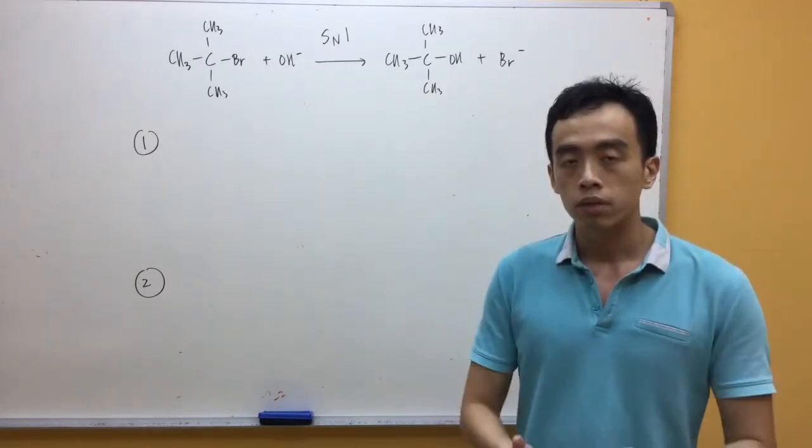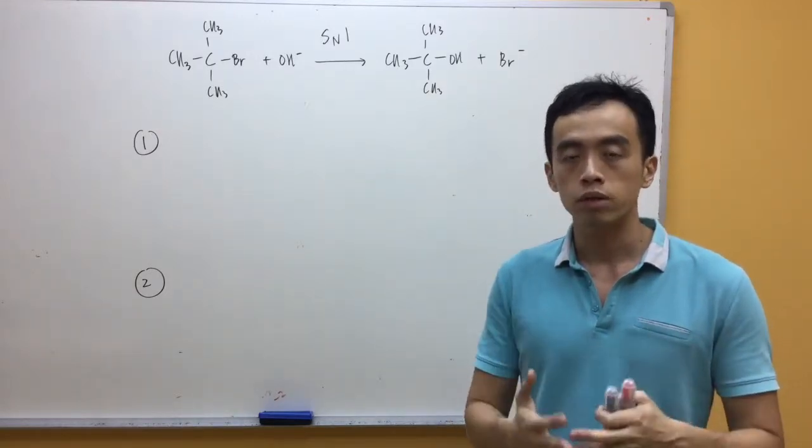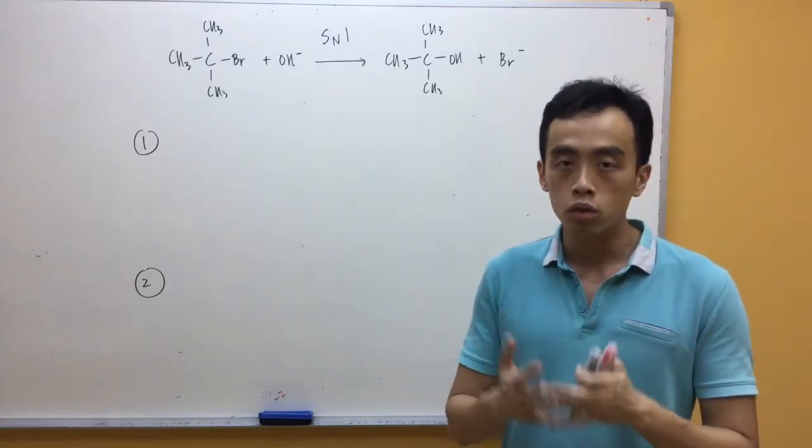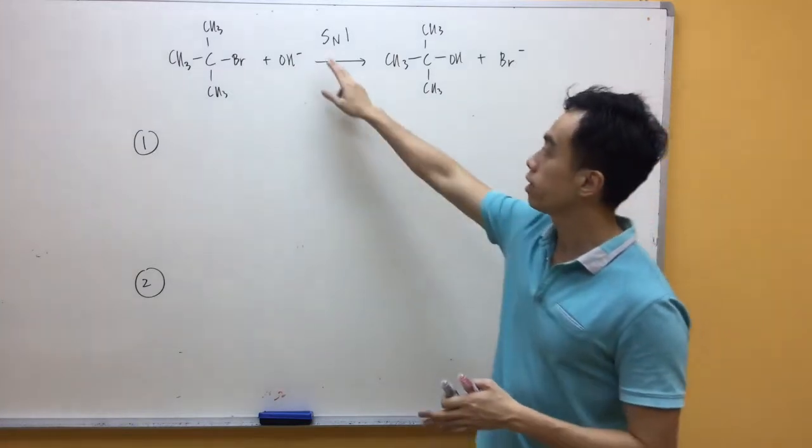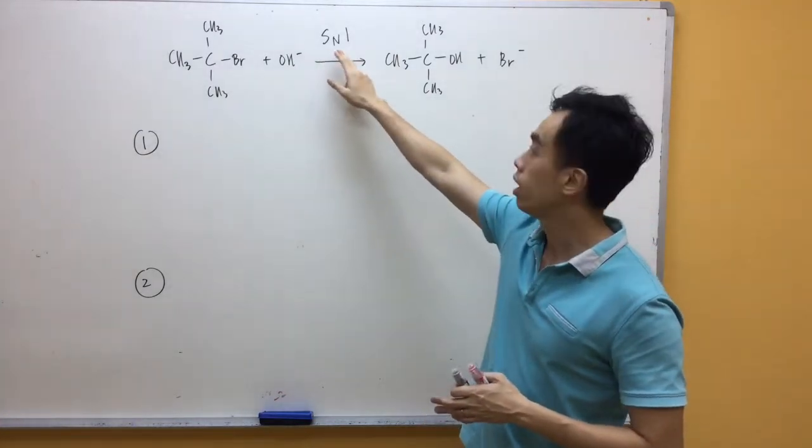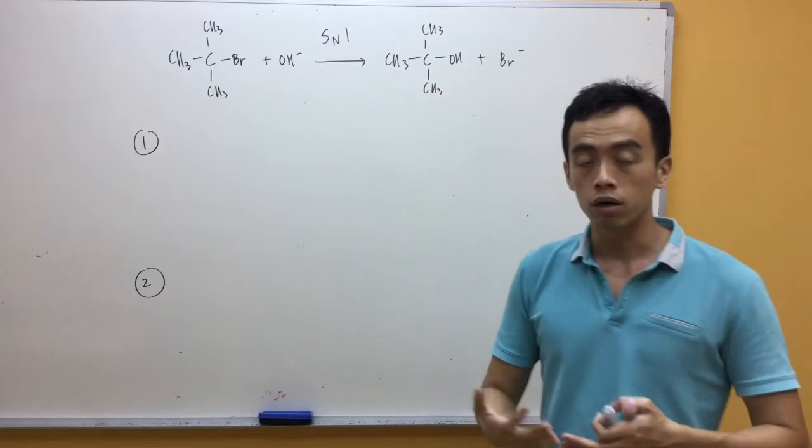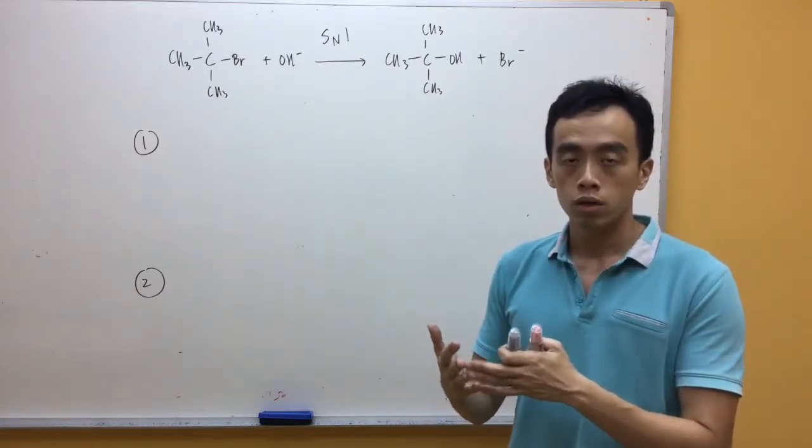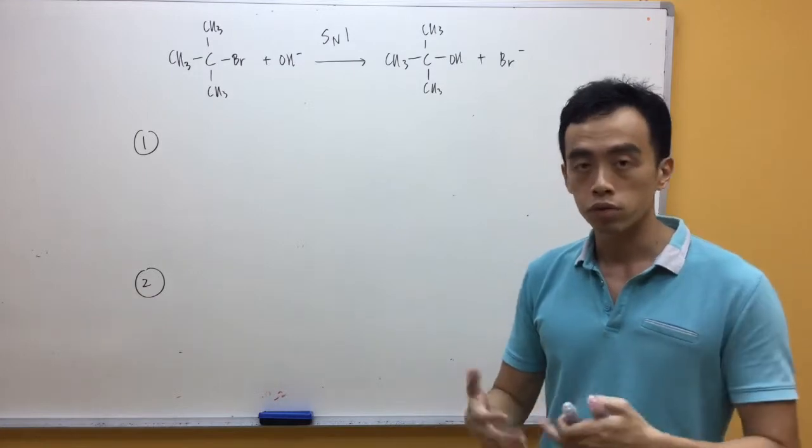Now, before we go into the mechanism proper, we want to explain why halogenoalkanes undergo nucleophilic substitution reaction. Basically, this S represents substitution, N represents nucleophile. So, how come our halogenoalkane undergoes nucleophilic reactions or it reacts with a nucleophile?